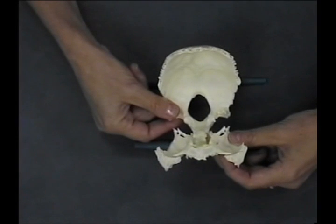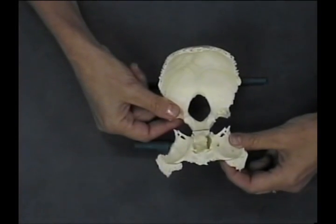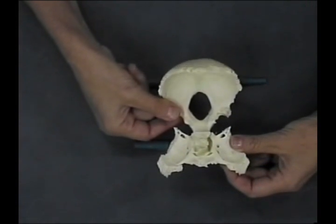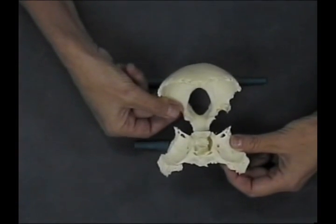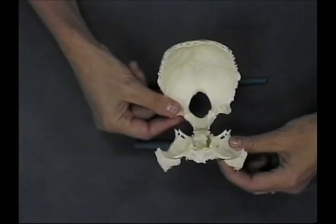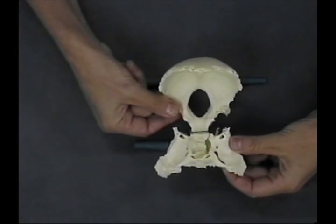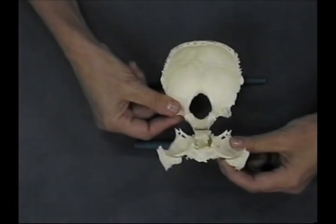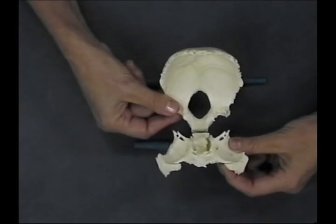So as the sphenoid does what it does in flexion and the basi sphenoid rises, then the occiput will also be rotating the same way. So you can see the base of the sphenoid is coming superiorly relative to the basi occiput. So this is called a superior vertical strain.